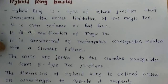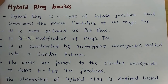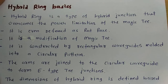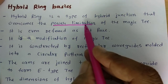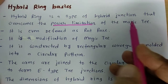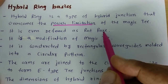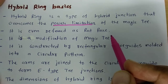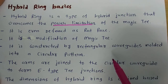Let us begin with the basics of hybrid ring. The hybrid ring is ultimately structured based on the magic T. We have seen the magic T operation and it has some limitations, particularly power limitations. To overcome those power limitations of the magic T, the hybrid ring was structured, and it is also referred to as a rat-race coupler.